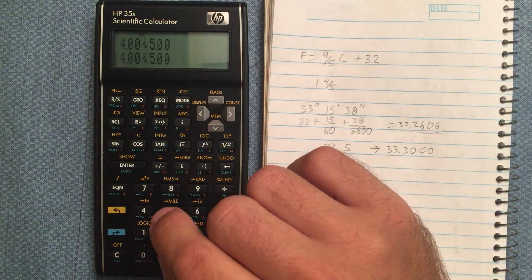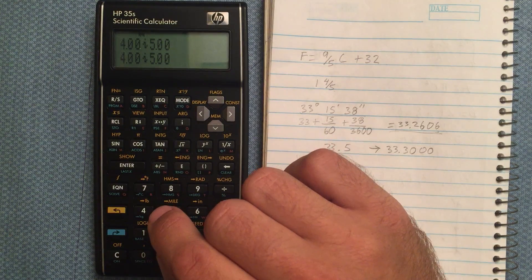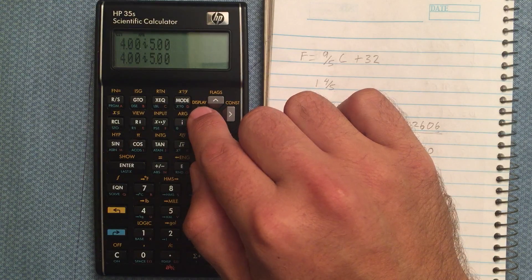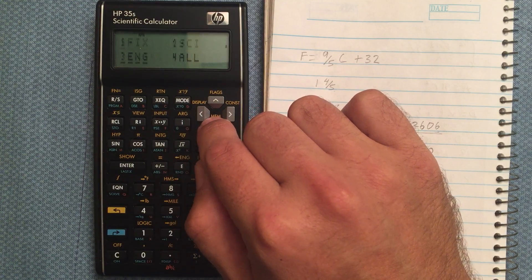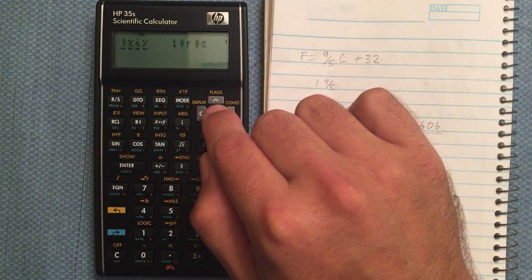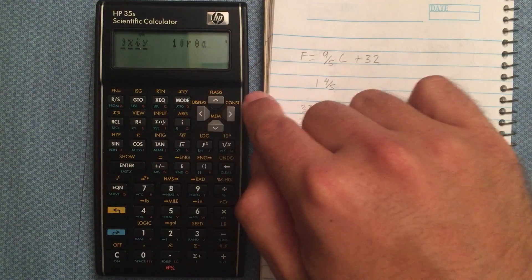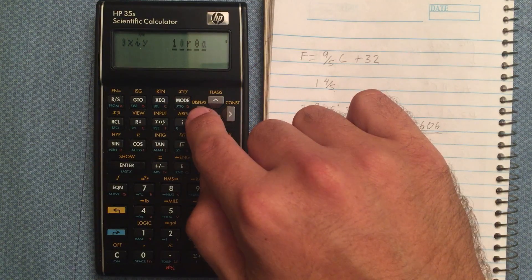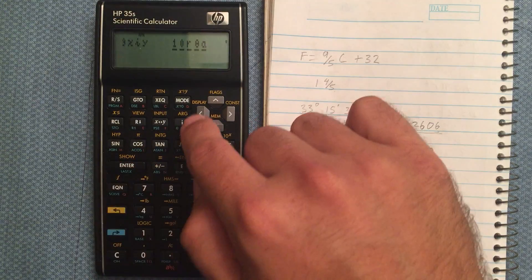Now if I convert this from rectangular to polar, and go up here, gold shift to display, then all the way down at the bottom, there's your rectangular, number 9, and then there's your polar, number 10. So I could hit enter there.